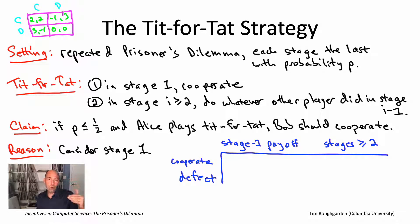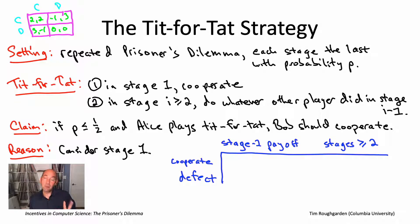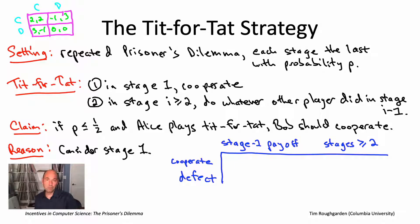The two rows of the payoff matrix correspond to Alice's two strategies — cooperate or defect, equivalently upload or not upload. The two columns correspond to Bob's possible strategies. Each entry specifies a pair of numbers: the payoffs to Alice and Bob respectively. There's a benefit of three from downloading the file you want, and a cost of one for uploading. So if both upload, they both get a payoff of two; if neither uploads, they both get zero.